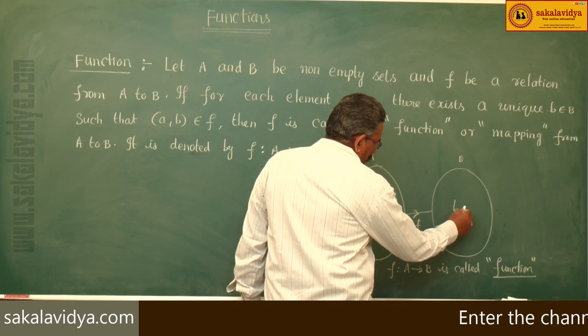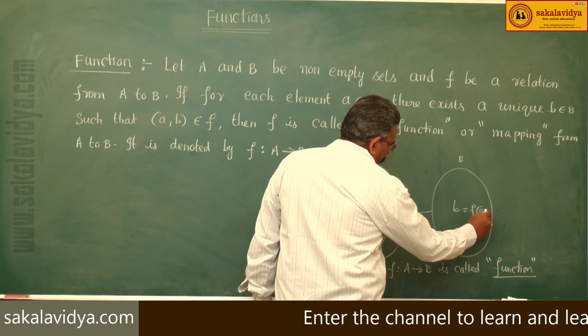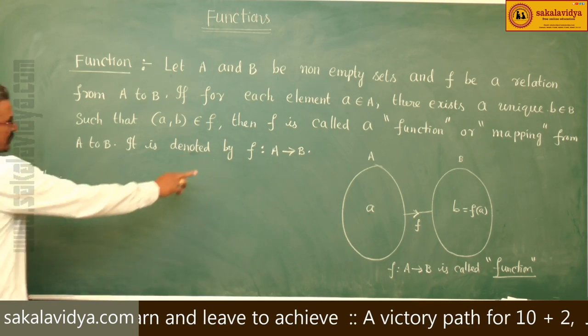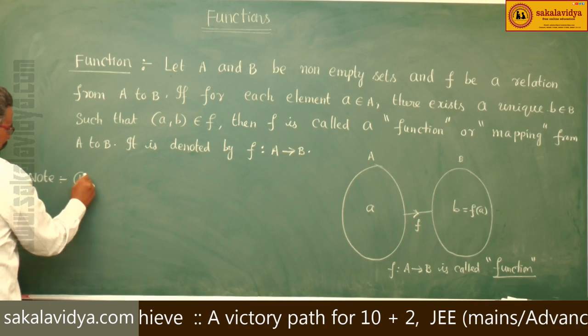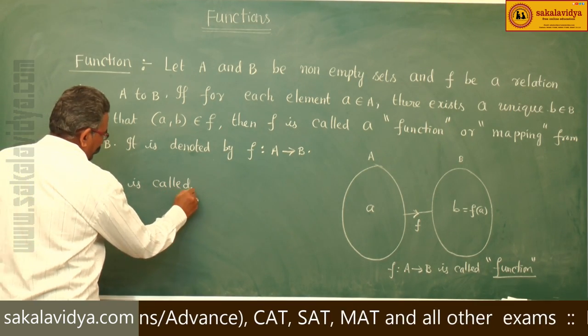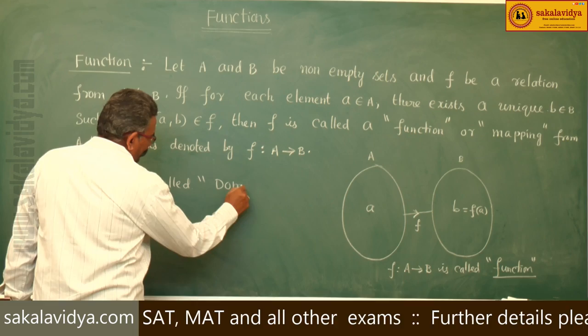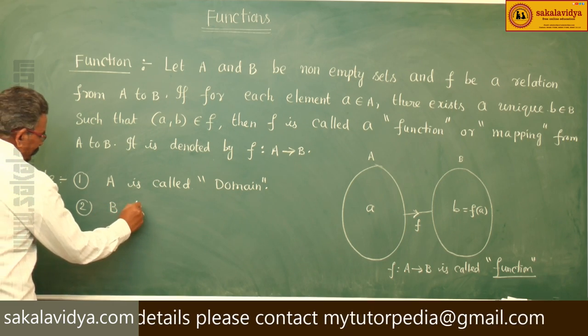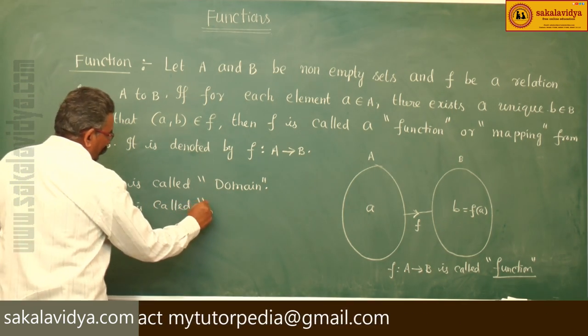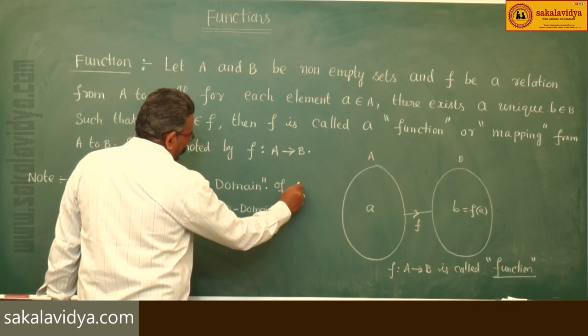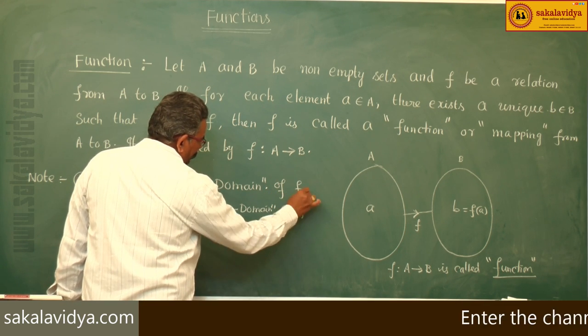So now, this b is also equal to f of a. Now, one note: if f maps A to B is a function, then the set A is called the domain, and the set B is called the codomain of function f.